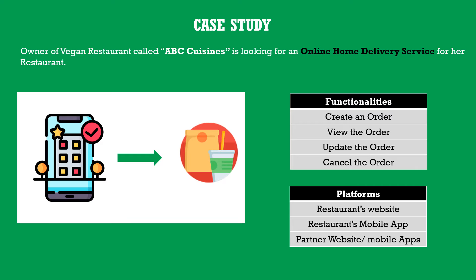As always, let us consider a simple case study before going into the concepts. The owner of a vegan restaurant called Vegan Gardens is looking for an online home delivery service. They want their customers to be able to create, view, update, or delete their home delivery orders. They also want these functionalities to be available either through the restaurant's website or mobile app, as well as through partner or aggregator applications and websites.